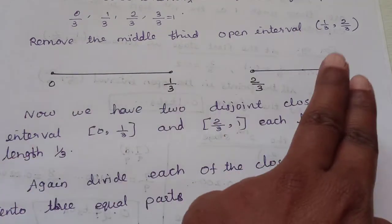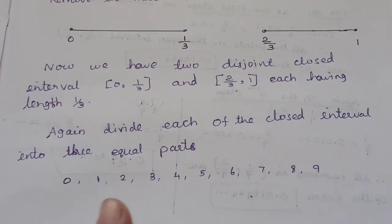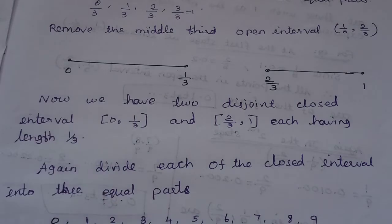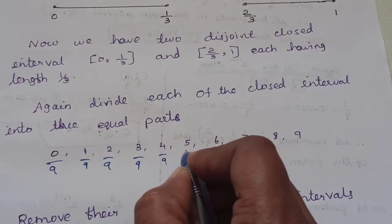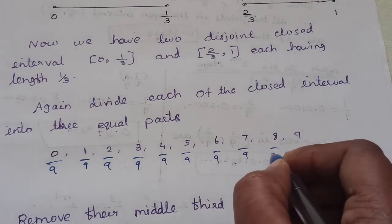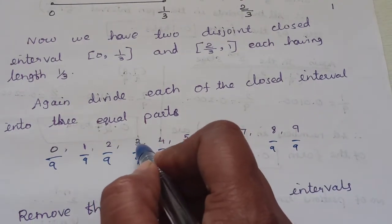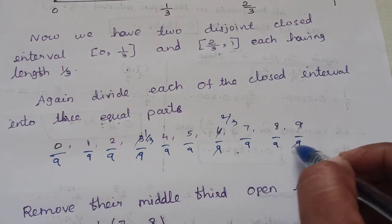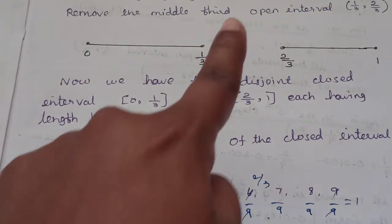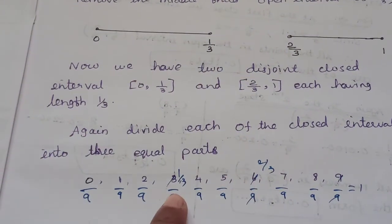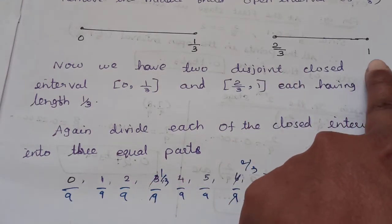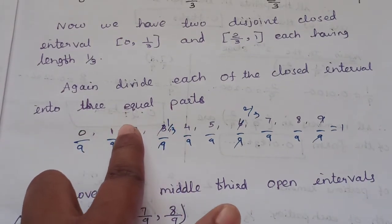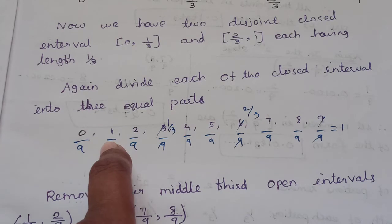Each closed interval has length 1/3. Again, we divide each of the closed intervals into 3 equal parts, giving denominators of 9. So the points become 0, 1/9, 2/9, 3/9 and so on. We then remove the middle open interval, specifically the open interval (1/9, 2/9) from the first piece.